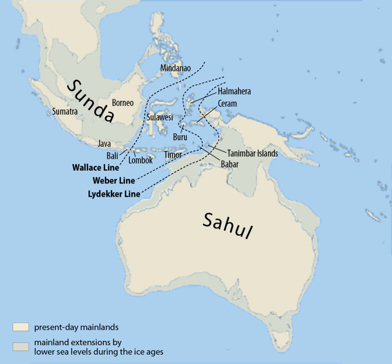The area of Sundaland encompasses the Sunda Shelf, a tectonically stable extension of southeast Asia's continental shelf that was exposed during glacial periods of the last two million years. The extent of the Sunda Shelf is approximately equal to the 120-meter isobath. In addition to the Malay Peninsula and the islands of Borneo, Java, and Sumatra, it includes the Java Sea, the Gulf of Thailand, and portions of the South China Sea.